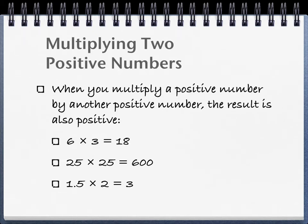When you multiply a positive number by another positive number, the result is also positive. This should be grade school for most of you. So positive 6 times positive 3 equals positive 18. Positive 25 times positive 25 equals positive 600. And positive 1.5 times positive 2, for those of you who understand decimals, equals positive 3.